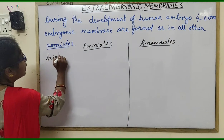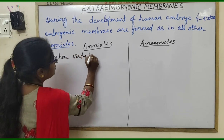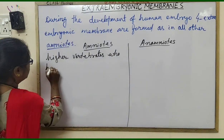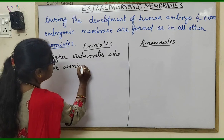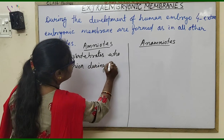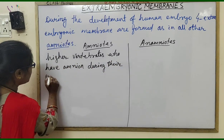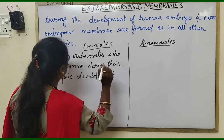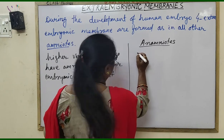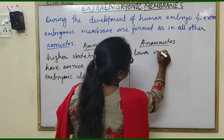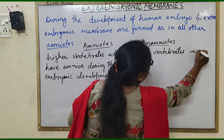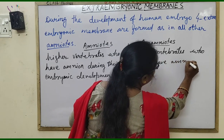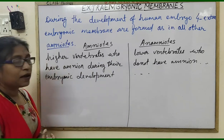Amniotes are the higher vertebrates who have an amnion during their embryonic development, whereas anamniotes are the lower vertebrates who do not have an amnion during their embryonic development.